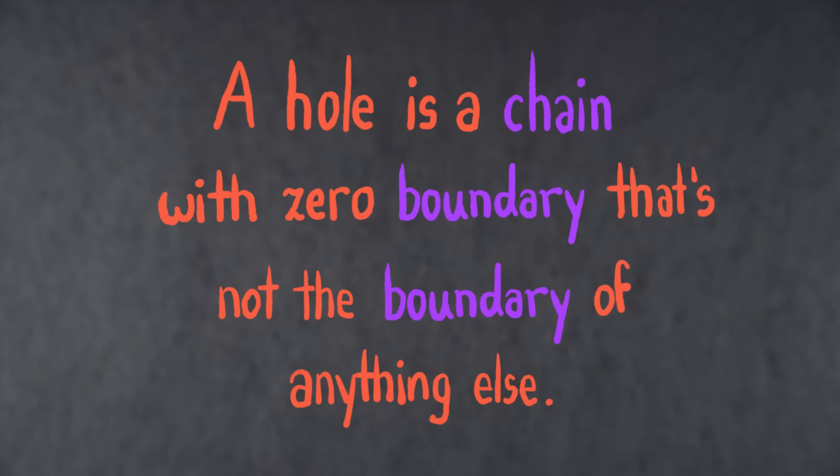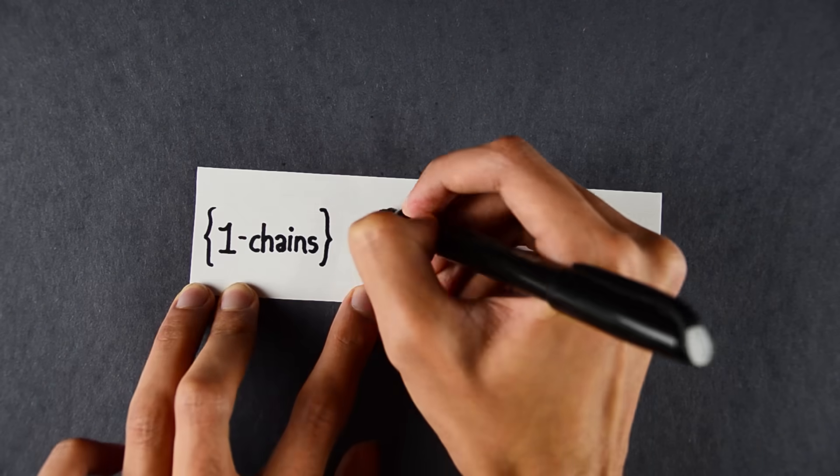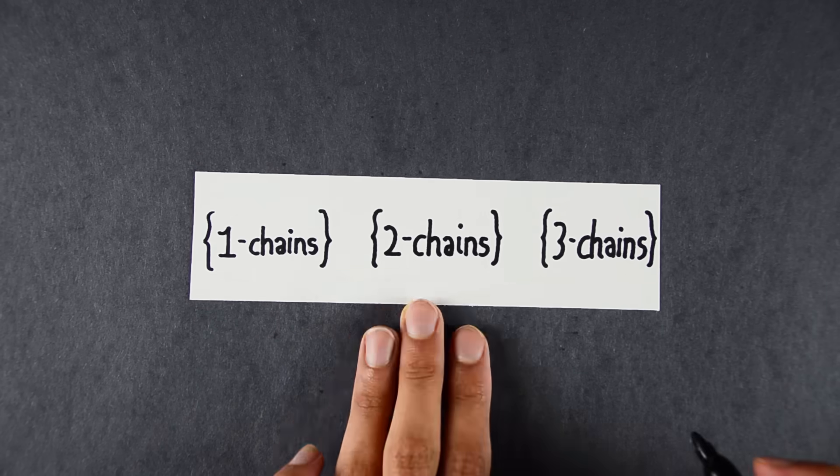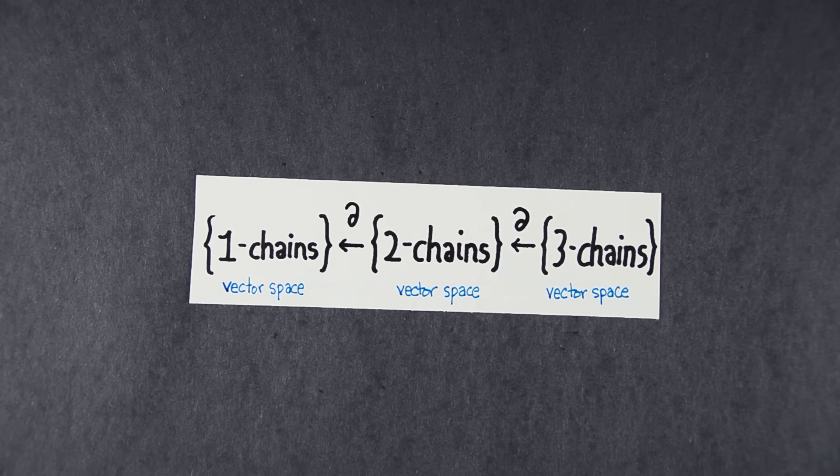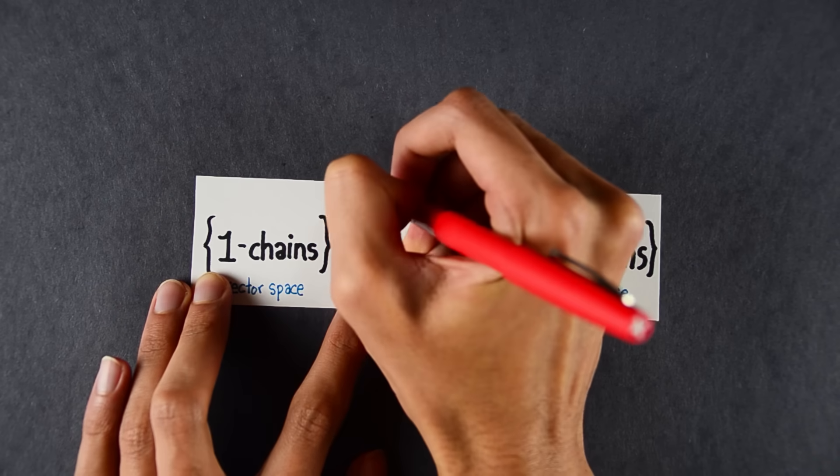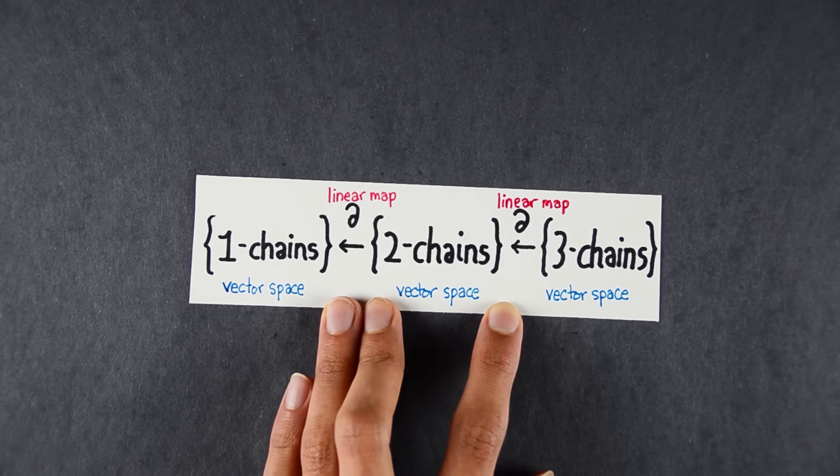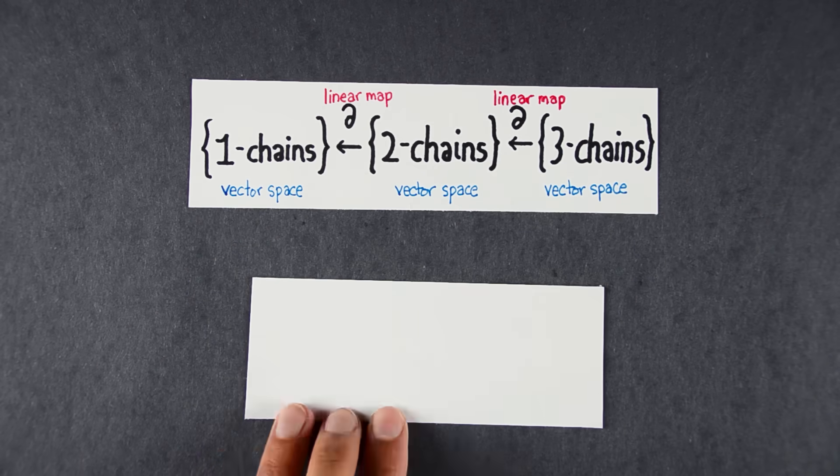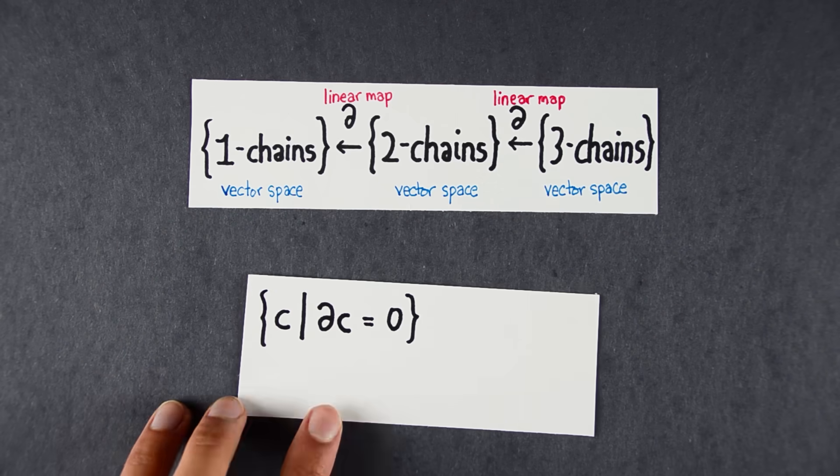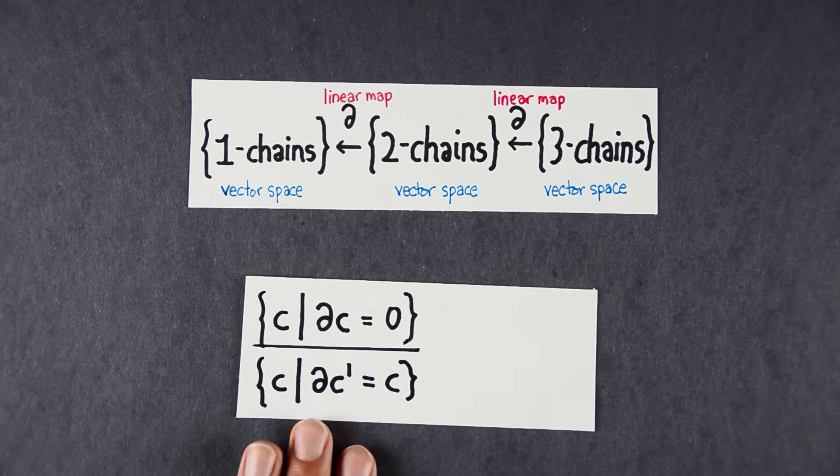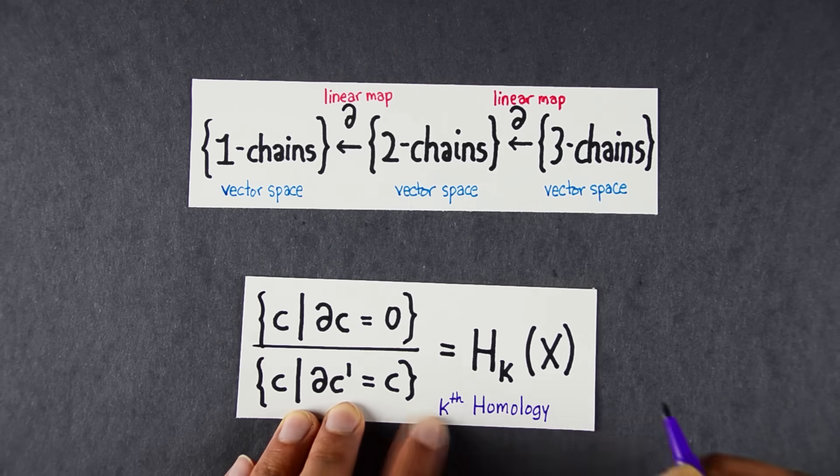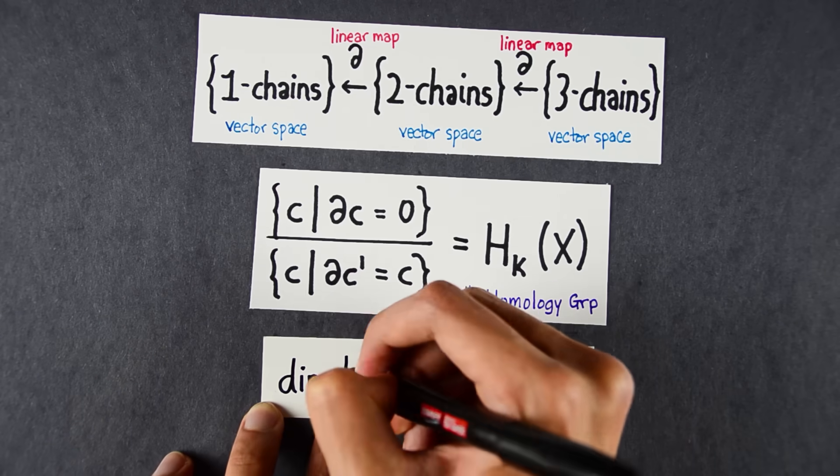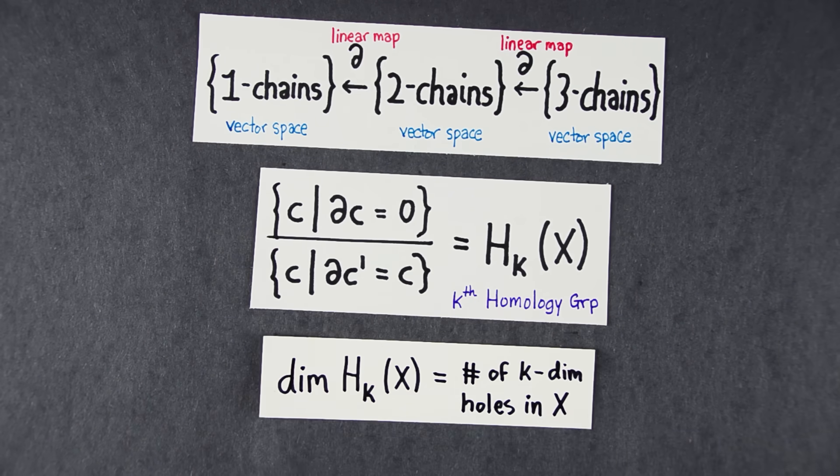Now let's use this language. A hole is a chain with 0 boundary that's not the boundary of anything else. To formulate this in general, we use linear algebra. You have 1-chains, 2-chains, 3-chains, and so on. All of these are vector spaces. The boundary is a linear map that maps 2-chains to 1-chains, 3-chains to 2-chains, and so on. So to find the k-dimensional holes, we just take the vector space of all chains with boundary 0, and we quotient out the chains that are the boundary of something else. This is a vector space denoted H_k of x, and it's called the k-th homology group of x. Now we define the number of k-dimensional holes to be the dimension of this vector space.